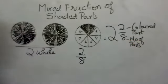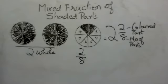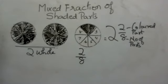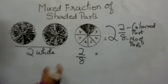So the top part refers to the colored or shaded parts, and the bottom part represents the total number of parts. The mixed fraction is two and two by eight. Now we want to make it into an improper fraction — we know how to do that. So what will the improper fraction be?